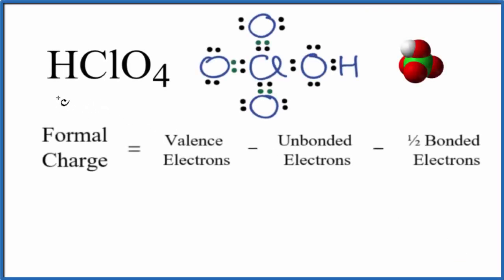In this video we'll calculate the formal charge for each element in HClO4, this is perchloric acid. We'll start with a Lewis structure and by calculating the formal charges we'll be able to tell if this is the best or most favorable Lewis structure for HClO4.